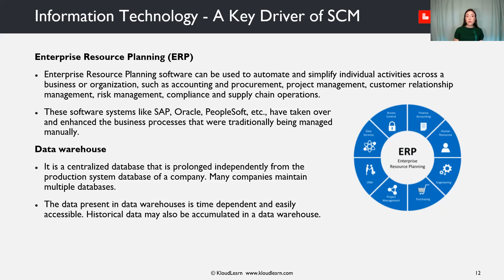Enterprise resource planning, or ERP, is another important information technology component for supply chain management. ERP software can be used to automate and simplify individual activity processes across a business or organization, such as accounting and procurement, project management, customer relationship management, risk management, compliance, and supply chain operations. These software systems, like SAP, Oracle, PeopleSoft, etc., have taken over and enhanced the business processes that were traditionally being managed manually.